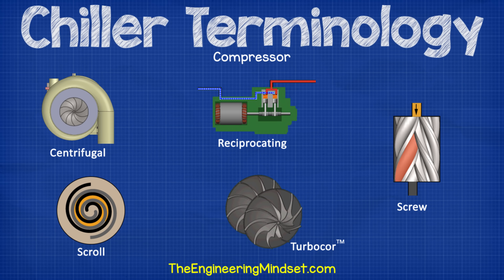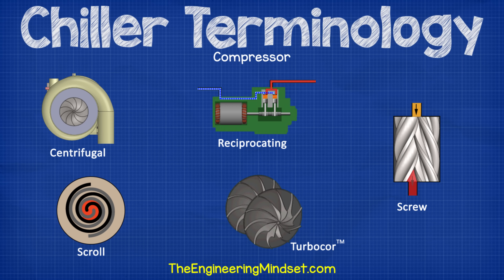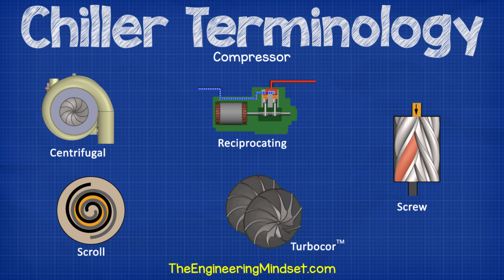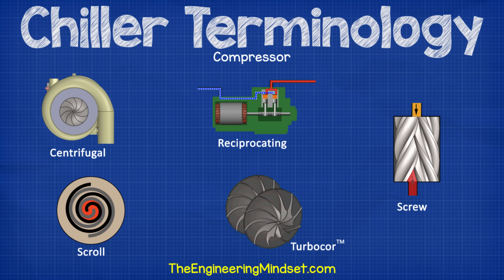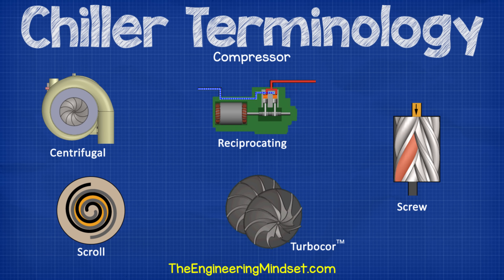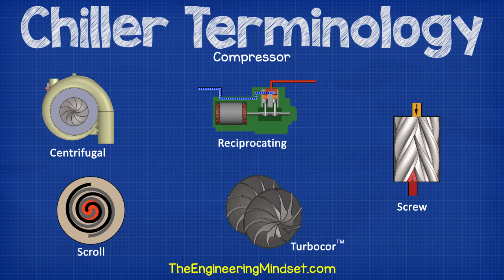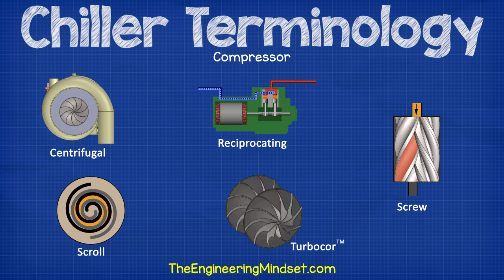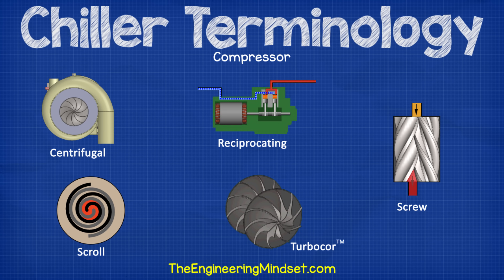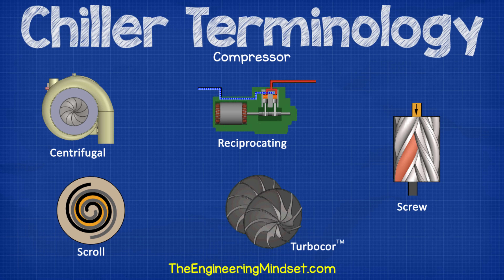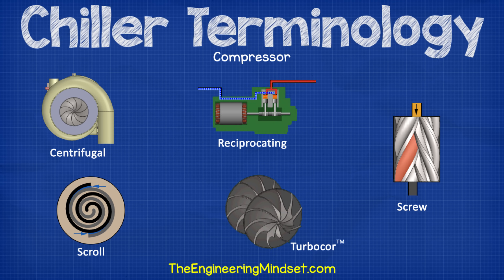Compressor. This moves the refrigerant around the chiller to collect the unwanted heat from the evaporator and move it over to the condenser. Some of the different designs you can get for chillers are: centrifugal type, which uses a rotating impeller to induce a centrifugal force on the refrigerant; turbo core, which is a more advanced variation of the centrifugal type using two small rotating impellers; screw type, which uses two helical rotating screws to compress the refrigerant; scroll type, which uses two spiral discs — one stationary and one rotating; and reciprocating type, which uses pistons and cylinders to compress the refrigerant into a smaller volume.